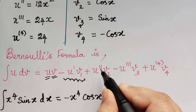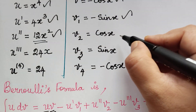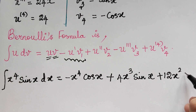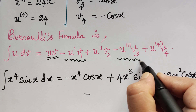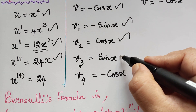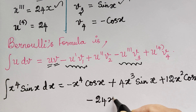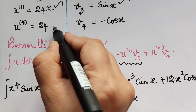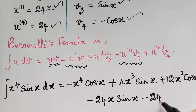Next is plus u'' times v2: u'' is 12x² multiplied with v2 which is cos x, giving plus 12x² cos x. Then minus u''' times v3: u''' is 24x multiplied with v3 which is sin x, giving minus 24x sin x. Finally, plus u'''' times v4: u'''' is 24 and v4 is minus cos x, giving minus 24 cos x.